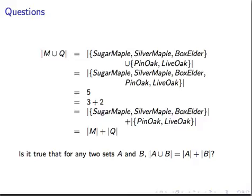Second question. If we take the union of maples and oaks, we get a set with cardinality 5. We notice that that's the same as the sum of the cardinalities of the two sets we unioned. What do you think? Is it true in general that the cardinality of the union of the two sets is equal to the sum of the cardinalities? Assume we're dealing with finite sets here.